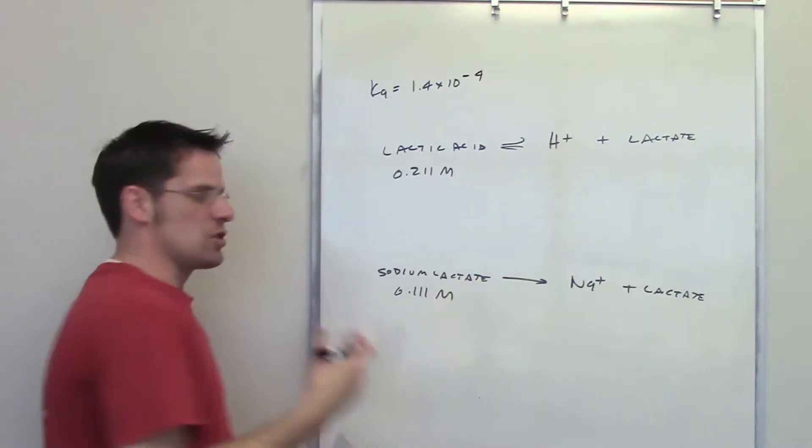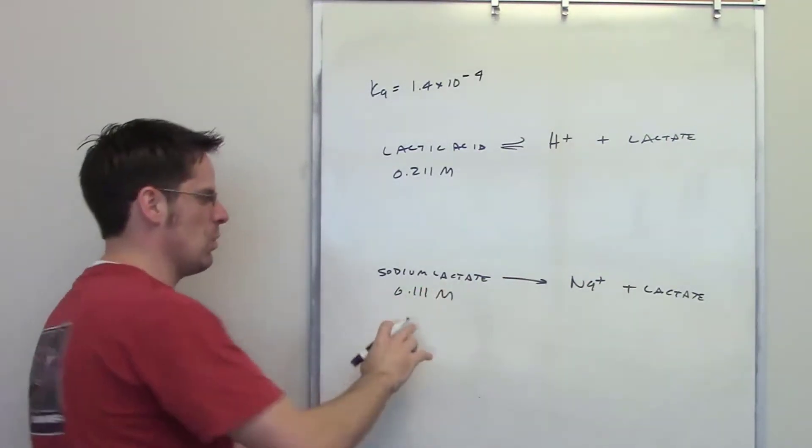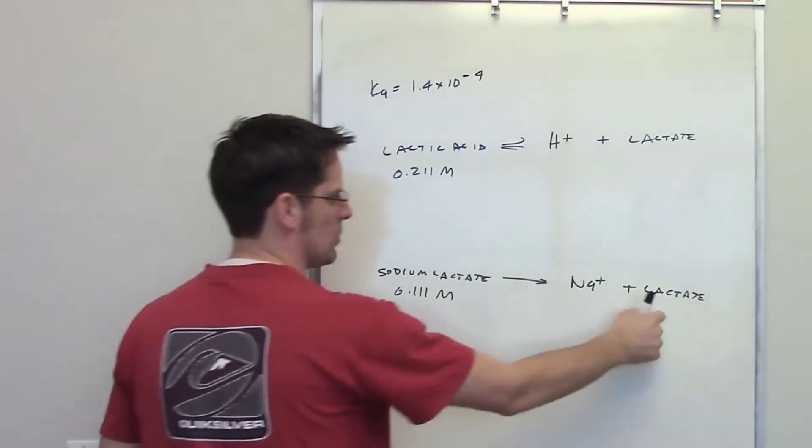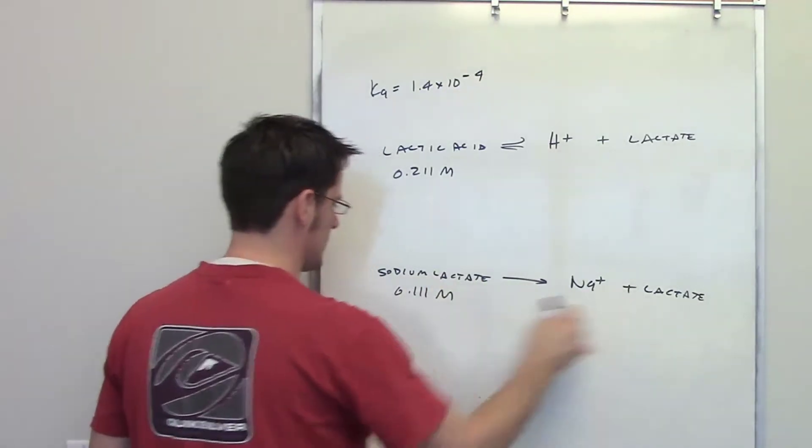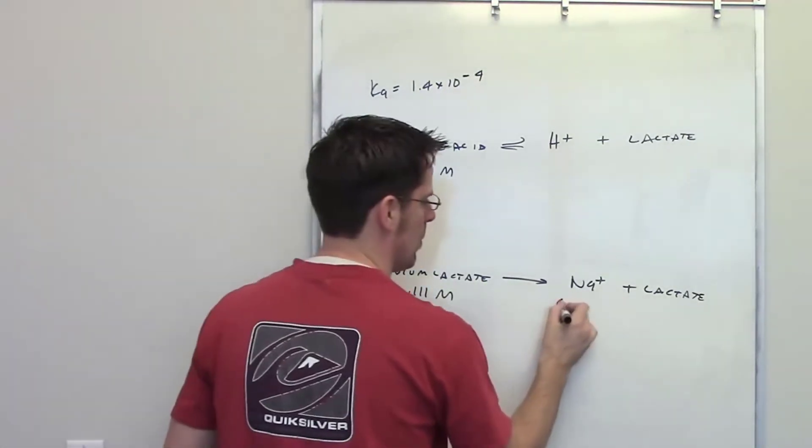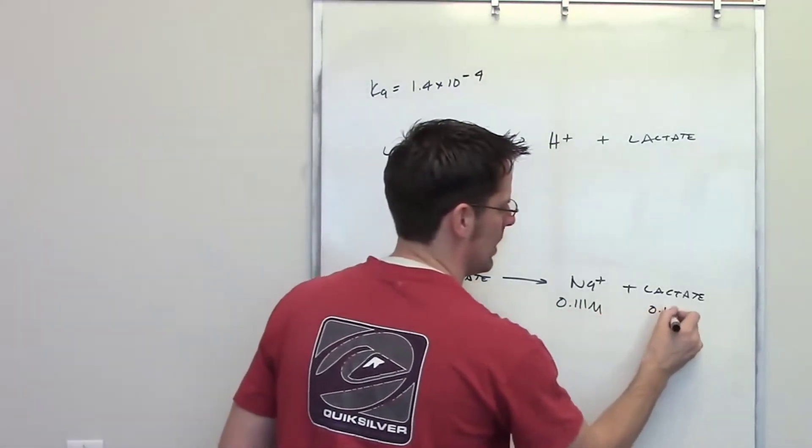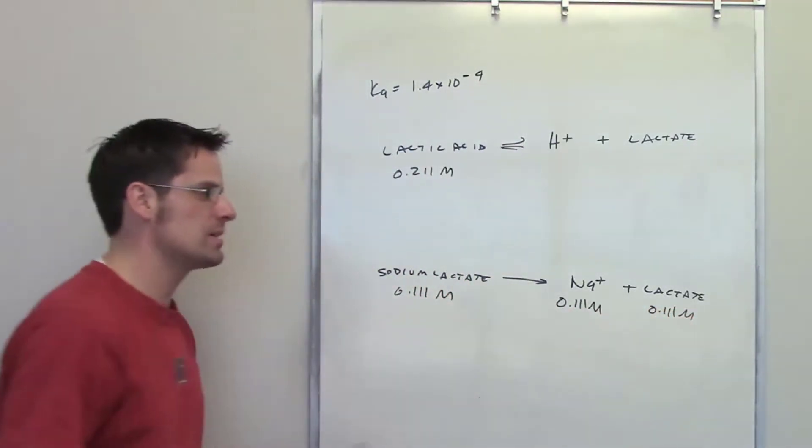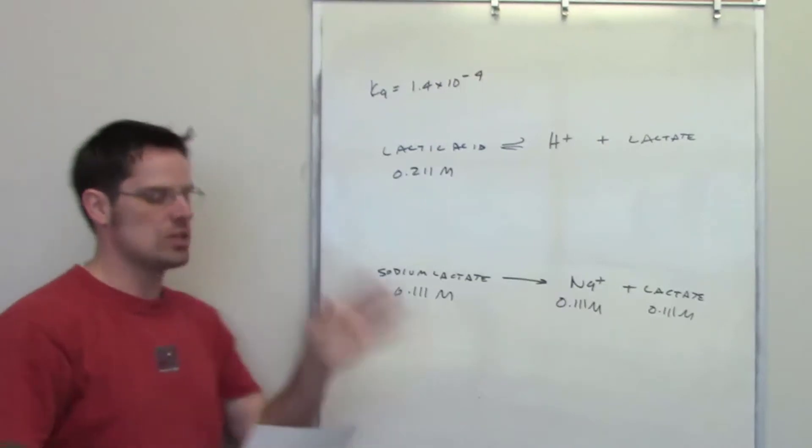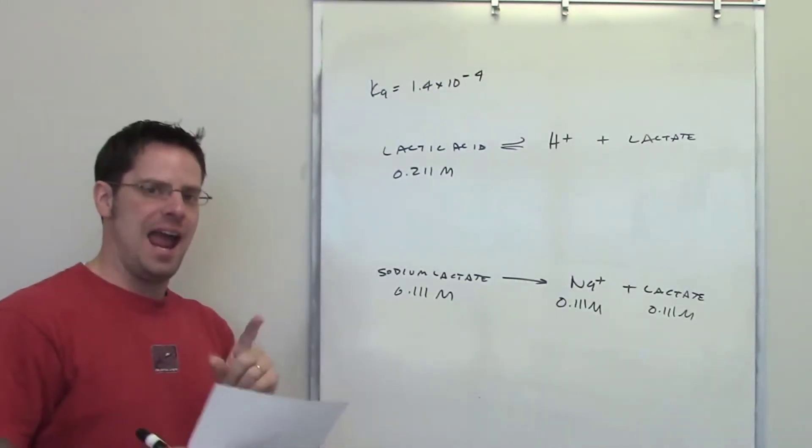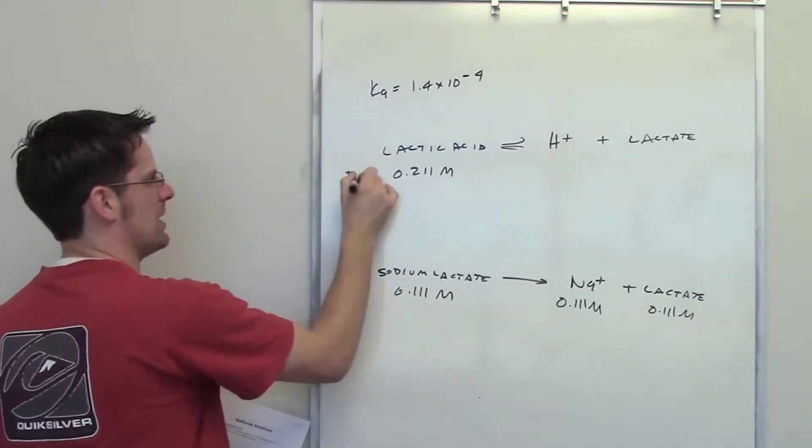Because sodium lactate is a strong electrolyte, dissolves very nicely in water, and it's present in a 1 to 1 to 1 ratio of sodium lactate to sodium to lactate, I'm going to get out 0.111 molar equivalence of sodium and 0.111 molar equivalence of lactate. In order to determine the pH of this, I have to make an ice table. So I'll go ahead and write that out here.